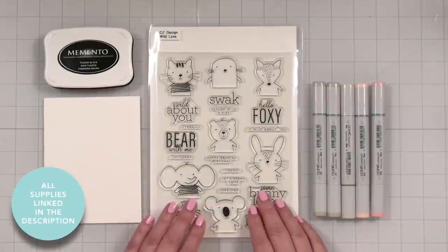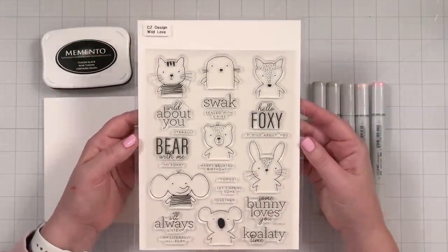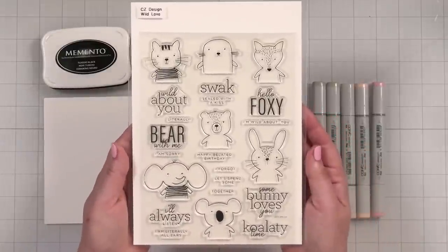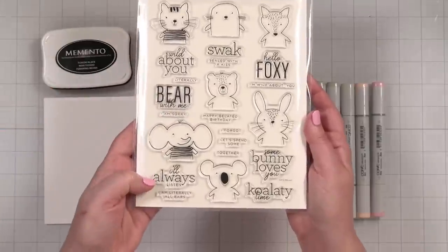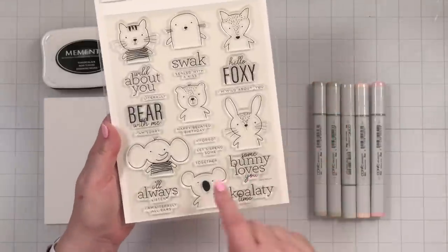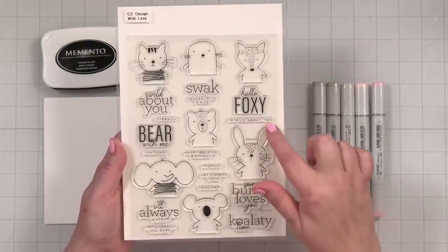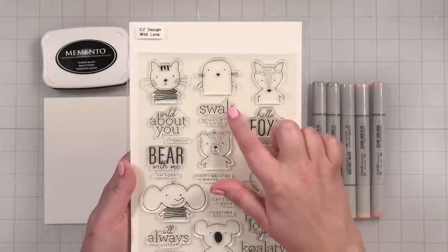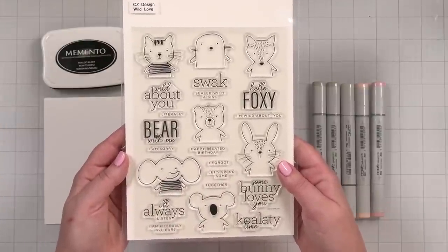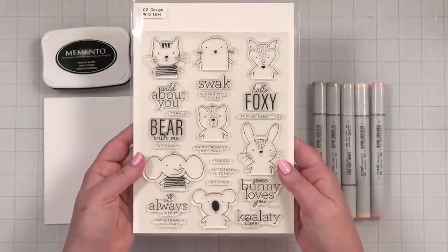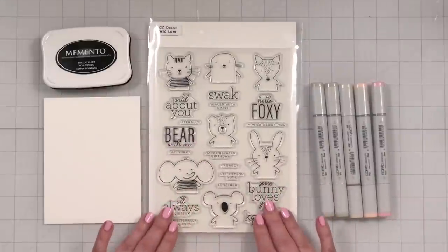Here's a look at the products I'll be using to create my card today. I wanted to show you this new stamp set called Wild Love. I licensed some really darling artwork to create this fun set of cute critters and cute little greetings like Wild About You, Bear with me I'm sorry, I'll always listen I'm literally all ears, Let's spend some quality time together. Cute, right? Somebody loves you. Hello Foxy. I'm Wild About You. Here's a cute one with a seal, sealed with a kiss. And again, happy belated birthday I forgot, so bear with me would be cute for an apology or belated birthday. It's just an all purpose set with cute little bodies to color.